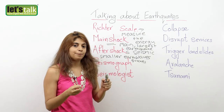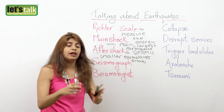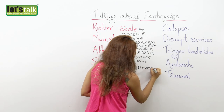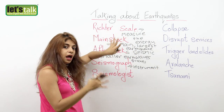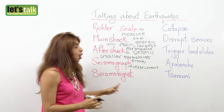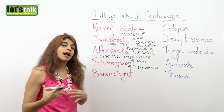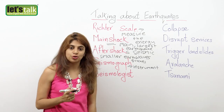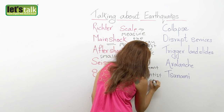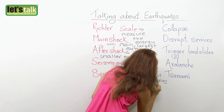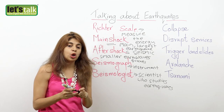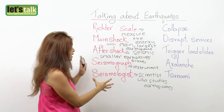The next term is seismograph. A seismograph is an instrument used to measure the vibrations of an earthquake. The earthquake is measured on a Richter scale, but the instrument used to measure the vibrations is called a seismograph. And the scientist who studies earthquakes is called a seismologist.